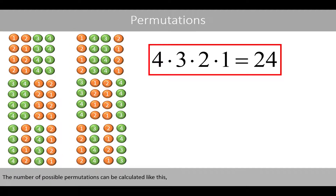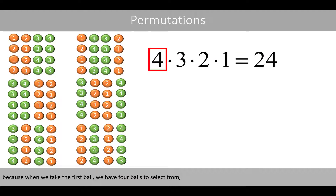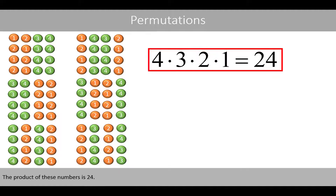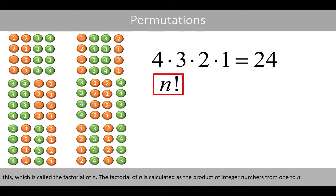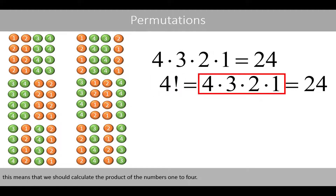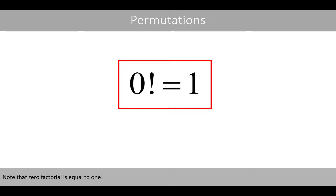The number of possible permutations can be calculated like this: when we take the first ball, we have 4 balls to select from; when we take the second ball, we only have 3 balls left; when we take the third ball, we only have 2 balls to select; and so forth. The product of these numbers is 24. This type of sequence is usually denoted as the factorial of n, calculated as the product of integral numbers from 1 to n. For example, if n equals 4, we calculate the product of 1 to 4. Note that 0 factorial is equal to 1.